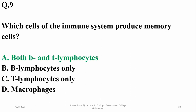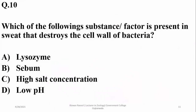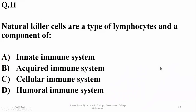Which cells of the immune system produce memory cells? Memory cells are formed by both B and T lymphocytes for secondary or future immune response. Question 10: which of the following substances in sweat is responsible for destroying the cell wall of bacteria? It is lysozyme.